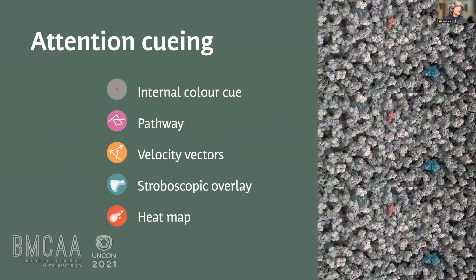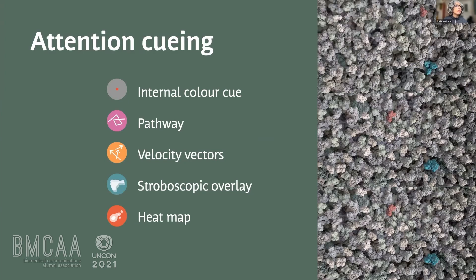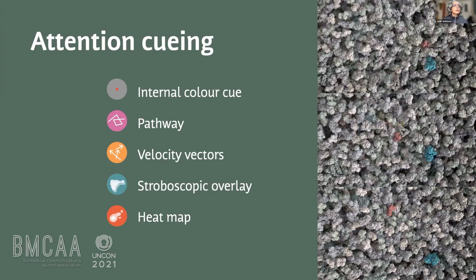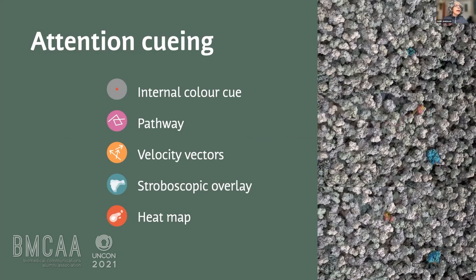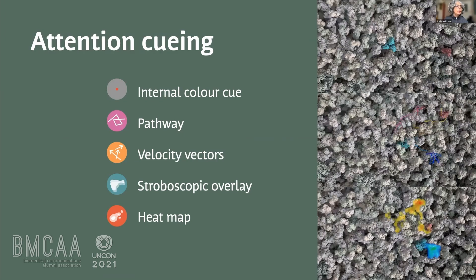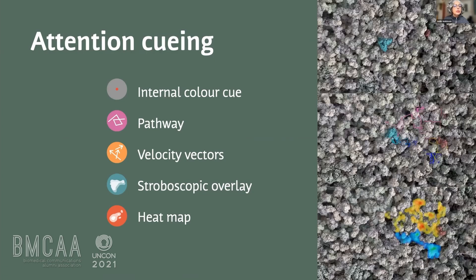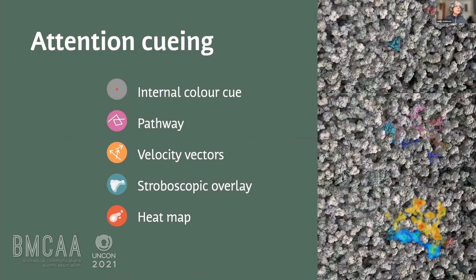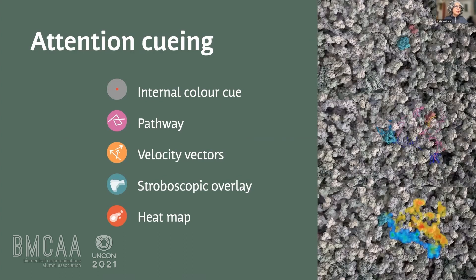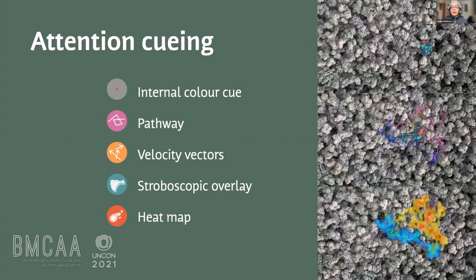We've also been looking at attention cueing and how it can be used to convey complex information — for example, selective color coding or internal color cues, velocity vectors, heat maps — all within the context of biology education. We're trying to understand how we can use the tools in our toolkit to convey complexity. To date, we've had some successes, but we've had as many failures.